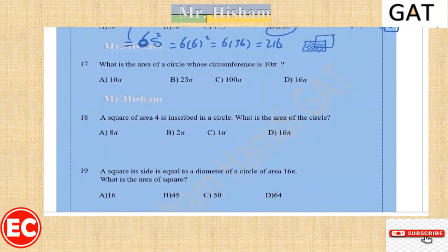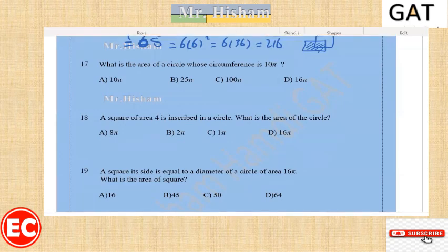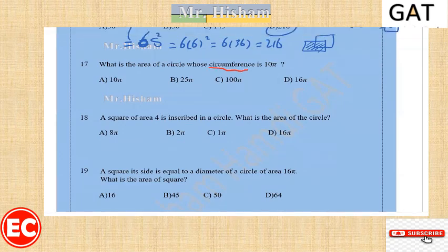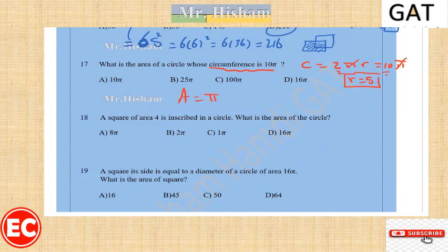Question seventeen: what is the area of a circle whose circumference is 10π? The circumference is 2πr, so 2πr = 10π, meaning r = 5. The area is πr², so π times 5 squared equals 25π.